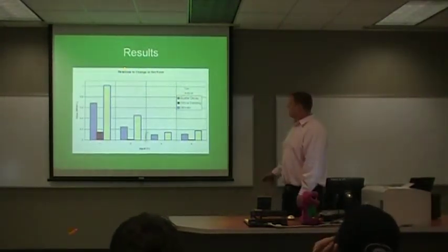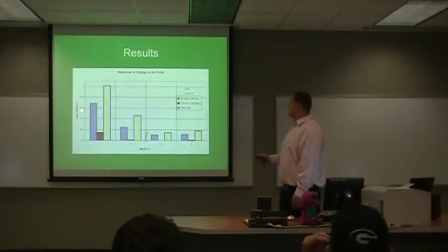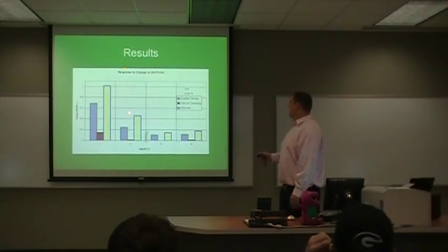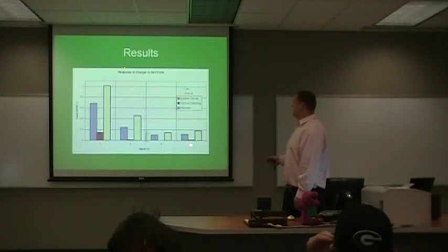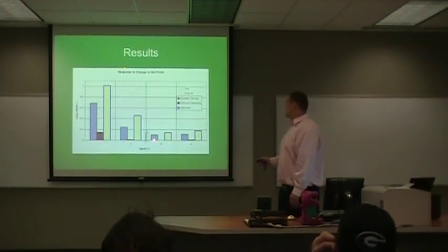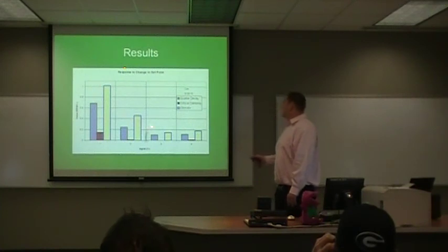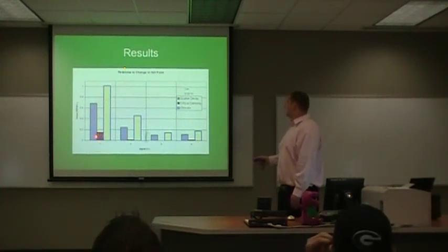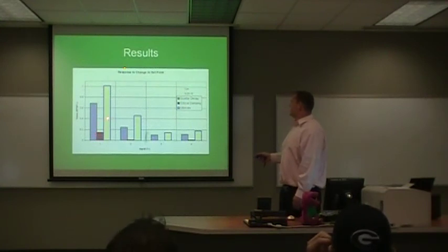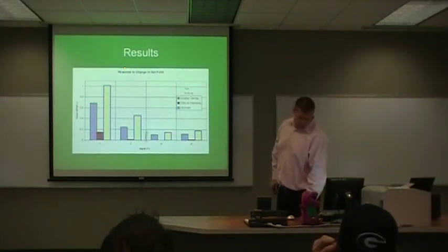Here's a bar chart of what I just discussed. As you can see, as the input percentages go up, the values tend to decrease over time. Right here we have the quarter decay, here's the critical dampening, this is the ultimate KCU. And as you can tell, they all are decreasing with the percentages.